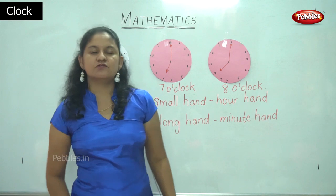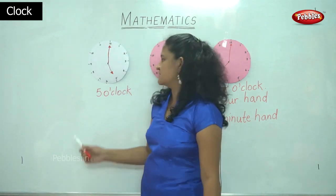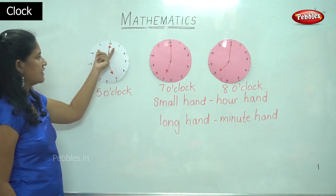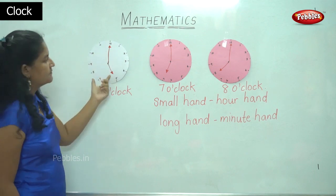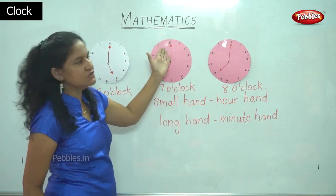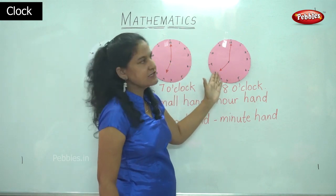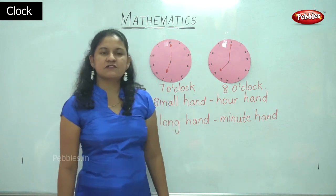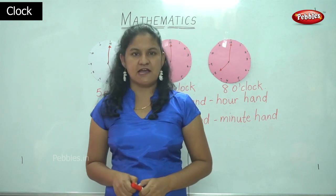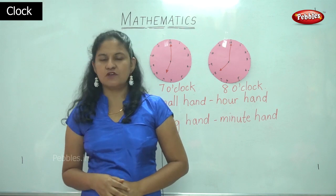So now we have learnt how to draw the hands of the clock for the following three timings. When it is five o'clock, the small hand points towards number five and the minute hand or the big hand points towards number twelve. When it is seven o'clock, the small hand or the hour hand points to number seven. When it is eight o'clock, the small hand or the hour hand points to eight and the big hand points to twelve. I hope you have understood the concept of how to draw the hands of the clock.